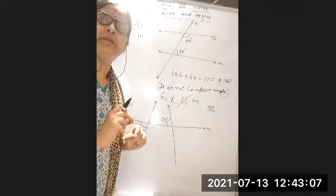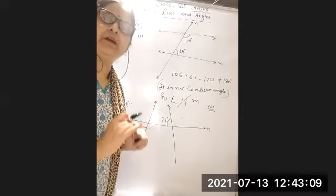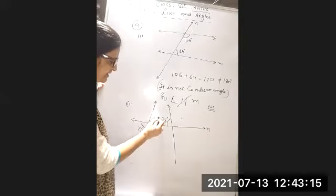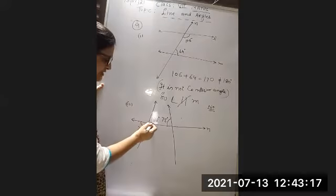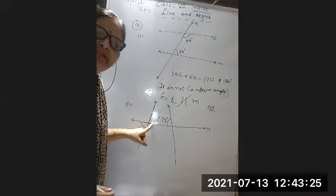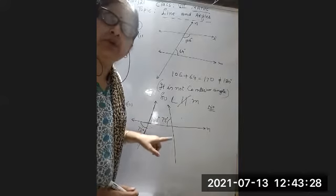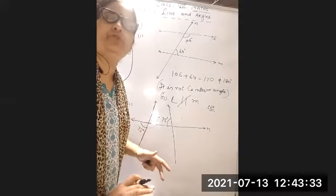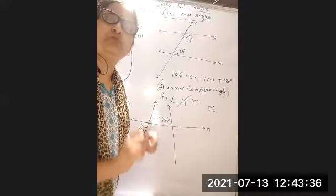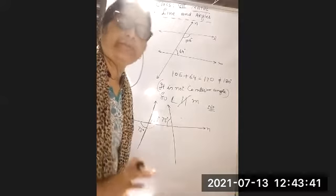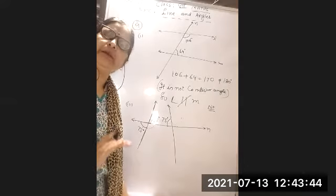There is no rule applicable here that we can use to say the lines are parallel. If I find the vertically opposite angle — since two rays are intersecting, angle 1 is 75 degrees. Now 75 + 75 = 150, which is not equal to 180, so we don't form the co-interior angle. We don't follow alternate interior or alternate exterior either. No rule is applicable, so the lines are not parallel.